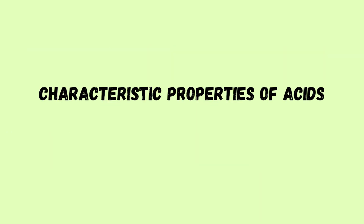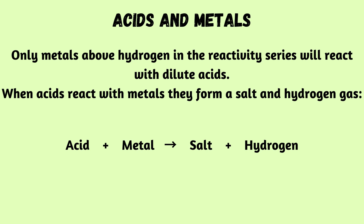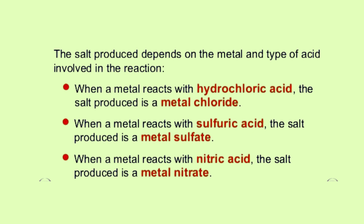What are the characteristic properties of acids? The first reaction is between acids and metals. Only metals above hydrogen in the reactivity series will react with dilute acids. When acids react with metals, they form a salt and hydrogen gas. If a metal reacts with hydrochloric acid, the salt produced is a metal chloride. With sulfuric acid, the salt is a metal sulfate. With nitric acid, the salt is a metal nitrate.